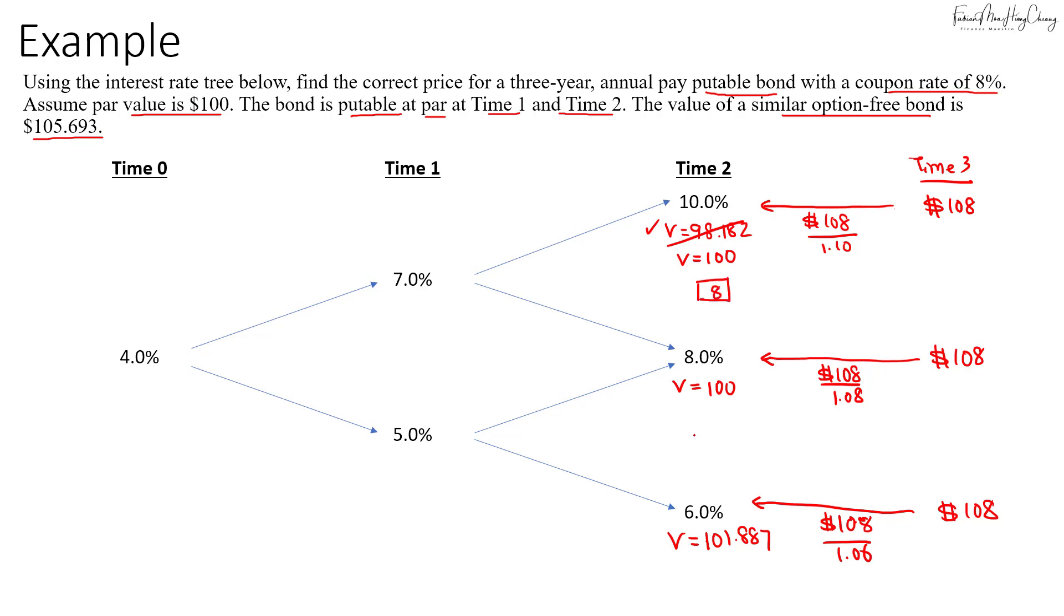Using the coupon for this period, we will then value it back to Time 1. For the higher node at 7%, we discount these two values. The value at this point is 0.5 times 100—the first 100 where we exercised the put—plus the second 100, plus the coupon $8. We discount it at 7%, which gives us 100.935.